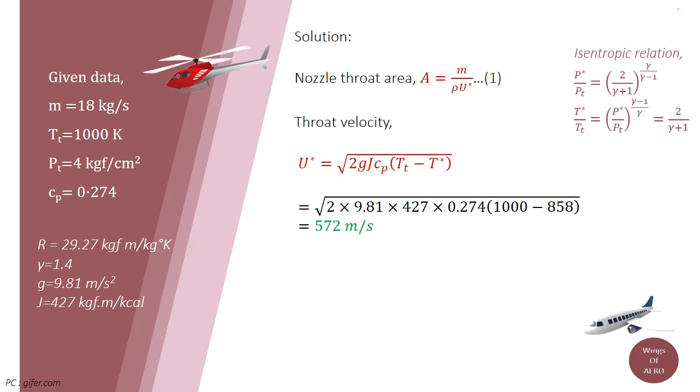Then, throat velocity U star is equal to square root of 2 into G into J into C subscript P into T subscript T minus T star. Where G is the acceleration due to gravity, which is 9.81 meter per second square, and J is the mechanical equivalent of heat which is 427 kg force meter per kilocalories, and C subscript P is the specific heat at constant pressure which is given.